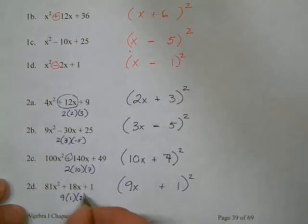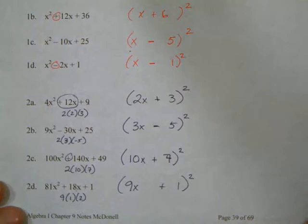81 is 9x. 1 is 1, obviously. And 9 times 1 times 2 is your 18. This concludes page 1 of section 9.7.